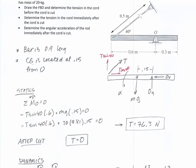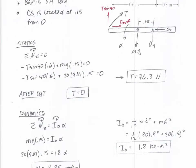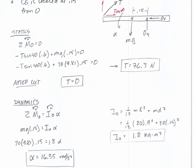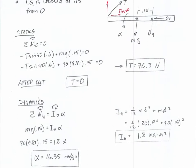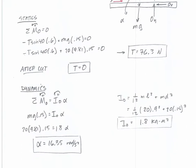What is the tension after the string is cut? That was not intended to be a trick — it was a hint. We don't include that tension once it starts rotating, so tension goes to zero. Once the tension goes away and it begins to rotate, we apply sum of moments about O equals IO·alpha. Using the parallel axis theorem, IO equals (1/12)ML² plus MD², giving IO equal to 1.8. Summing moments about O gives alpha equal to 16.35.